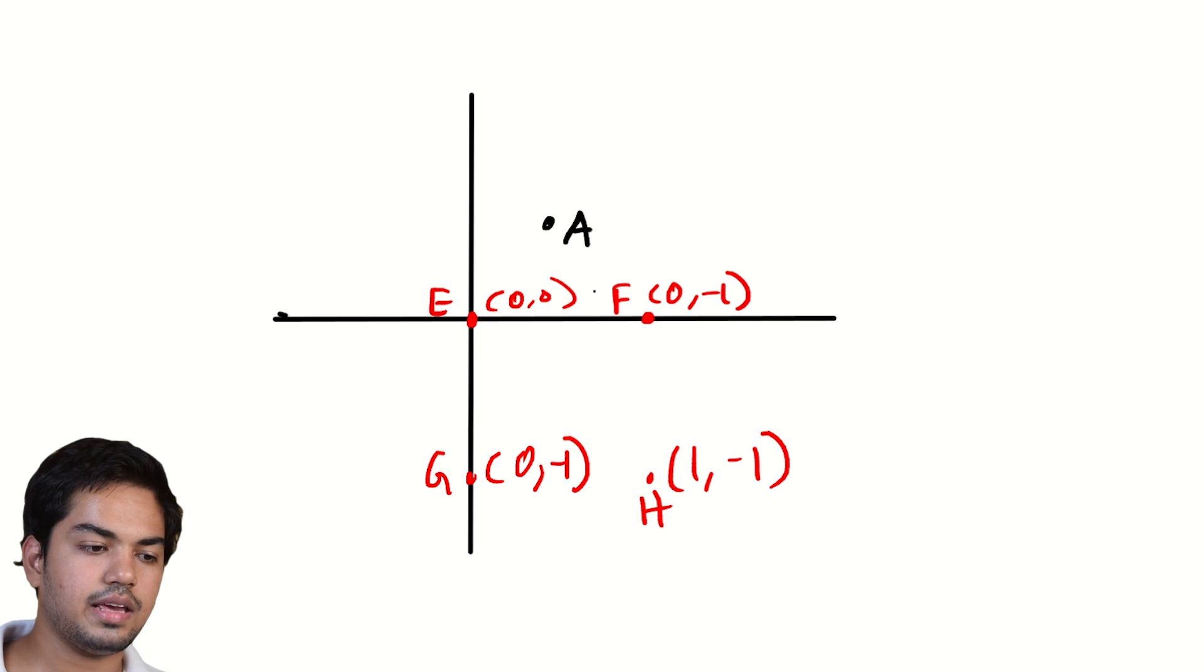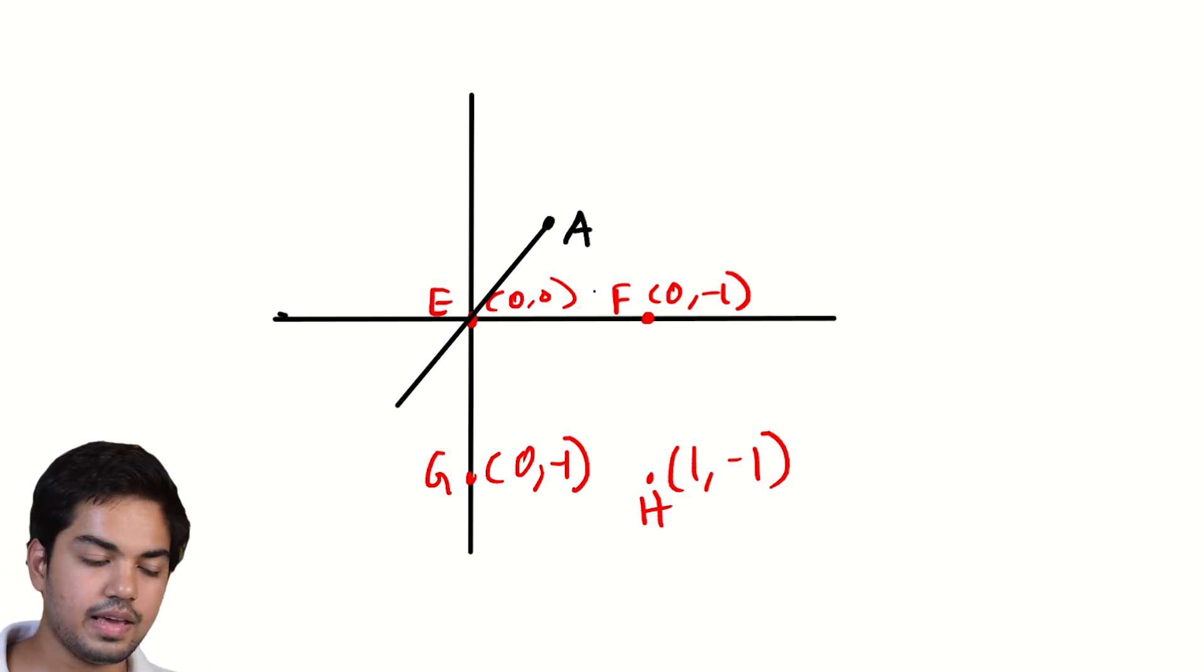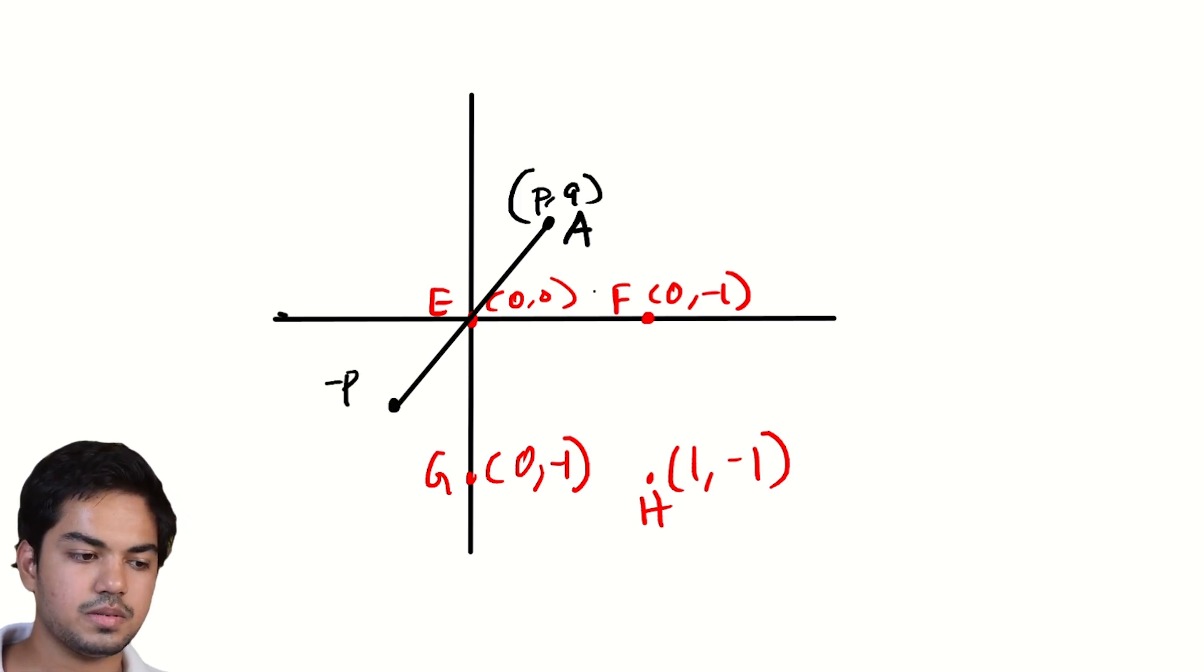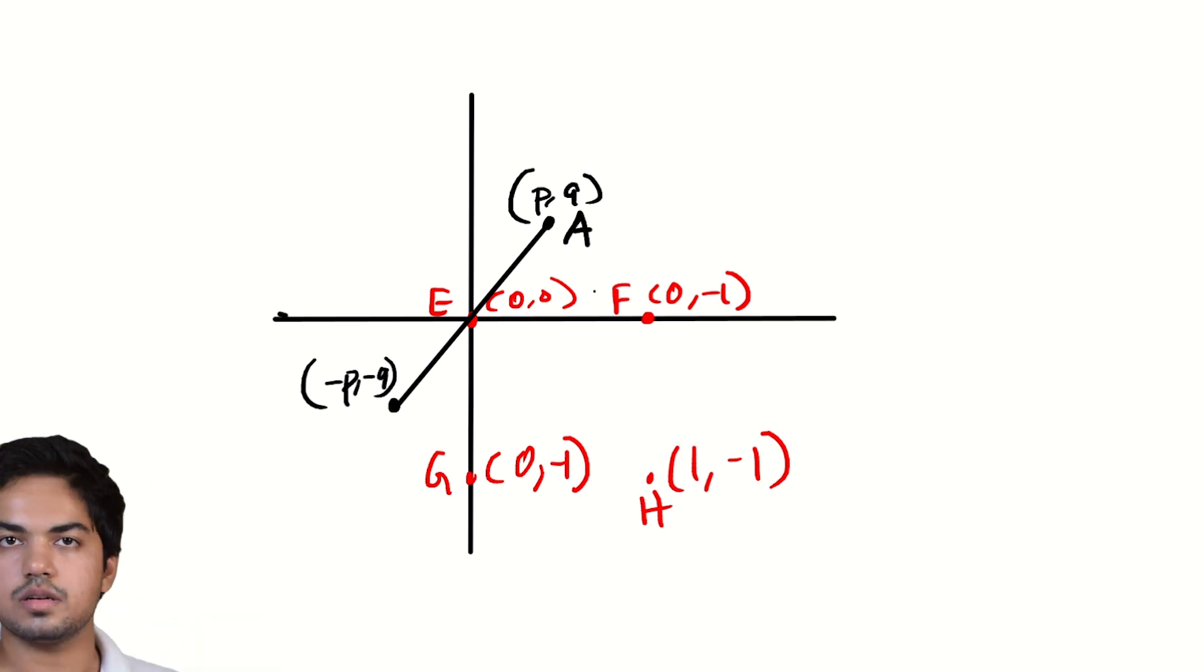If E is going to be the midpoint of AB, I only need to reflect A across E to get B. That's what it means to be a midpoint, right? So, B is fixed. And it makes sense that soon everything will be fixed. So, the only choice is that of A. So, if we fix A to be some (P, Q), this fixes B to be (-P, -Q), since we reflected it over the origin.